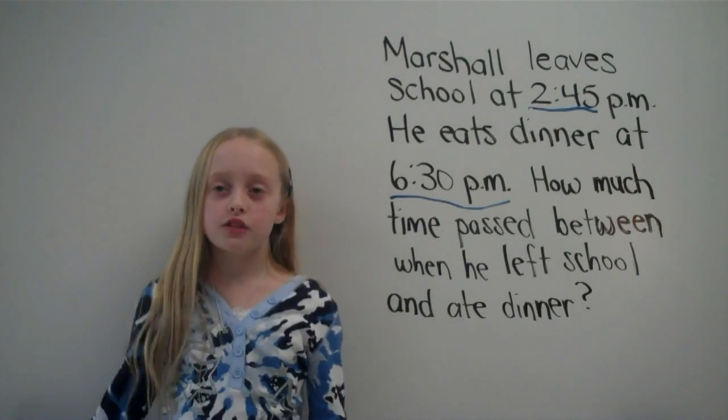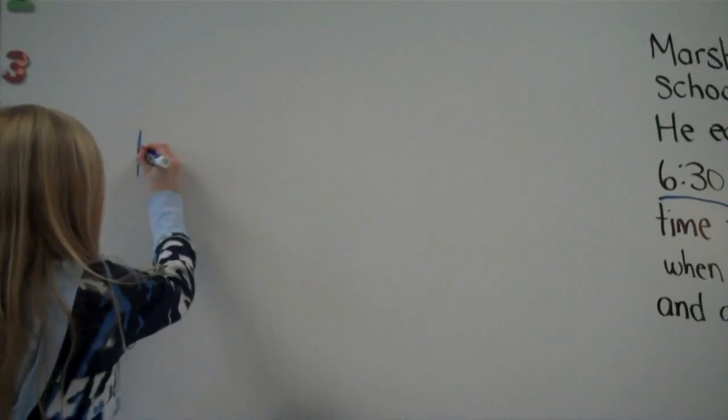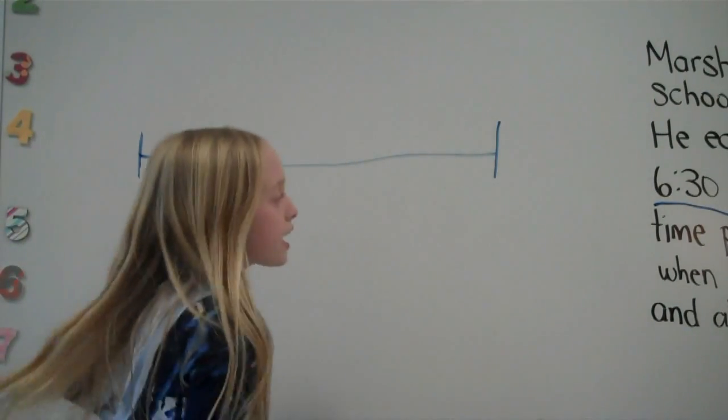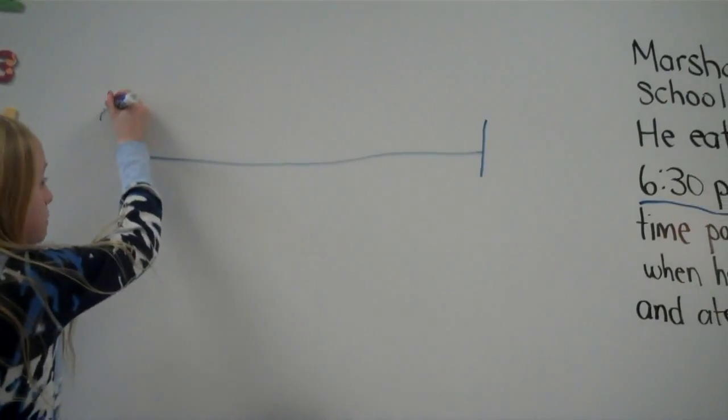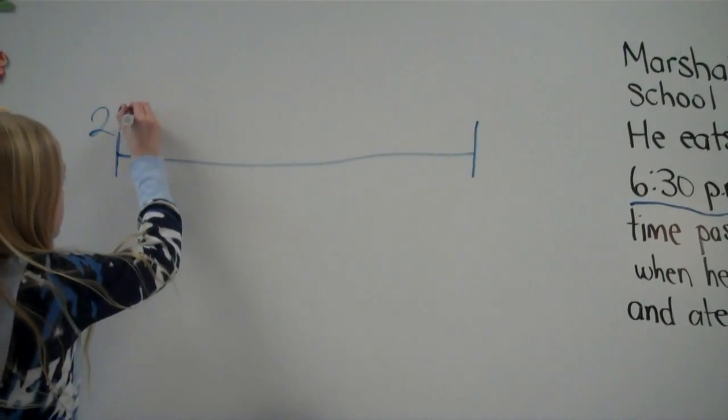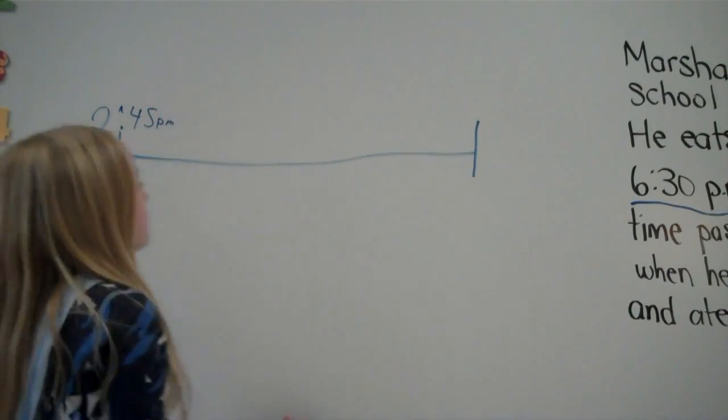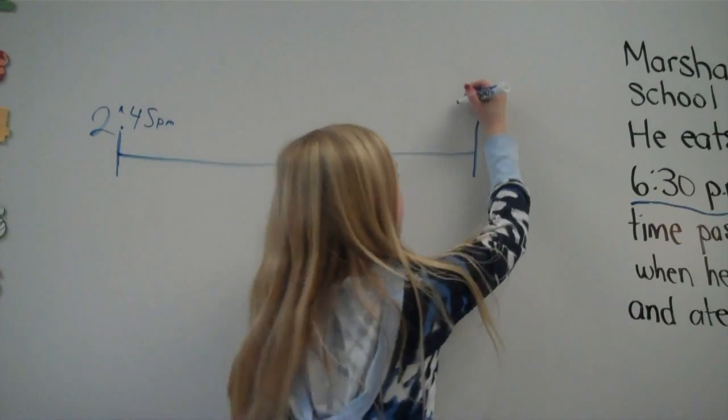Then we have to make a number line with this. And we take the starting time and put it at the beginning. Then we take the ending time and put it at the end.